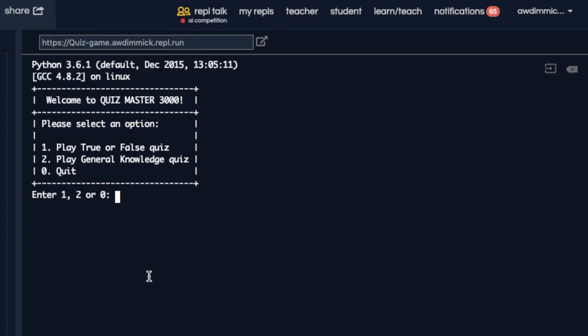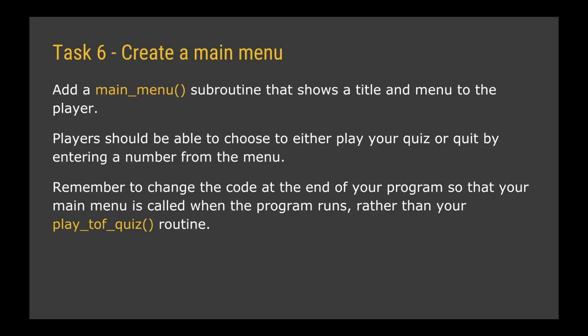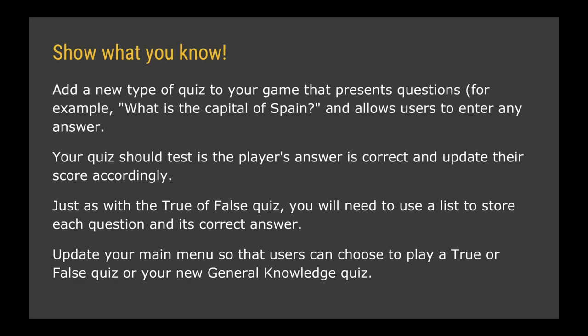Let's rerun — entering zero says thanks for playing and quits. Running again and entering one starts the true or false quiz. For your final task, create a main menu subroutine that shows a title and menu, letting players choose to play the quiz or quit. Remember to change the code at the very end of the program so that main_menu is called when the program runs. For the show-what-you-know task, try adding a general knowledge quiz that presents questions, lets users type any answer, checks correctness, updates their score, and adds an option to your main menu.